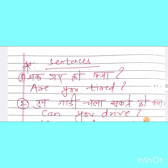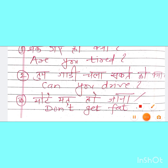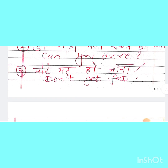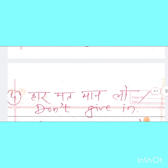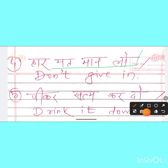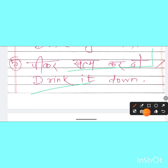इसके आगे कुछ sentences हैं. पहला sentence: 'थक गए हो क्या?' — Are you tired? दूसरा: 'तुम गाड़ी चला सकते हो क्या?' — Can you drive? तीसरा: 'मोटे मत हो जाना' — Don't get fat. चौथा: 'हार मत मान लो' — Don't give in. पाँचवाँ: 'पी कर खत्म कर दो' — Drink it down.